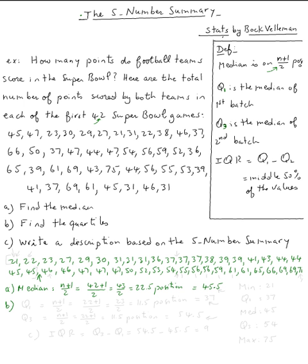To find Q1, we need to find the median of the lower half of the data. There are twenty-two scores in the lower half, so Q1 will be in the n plus one over two position: twenty-two plus one over two equals twenty-three over two, which is eleven point five position. Counting through the lower half, position eleven point five is right between thirty-seven and thirty-seven, so Q1 is just thirty-seven.